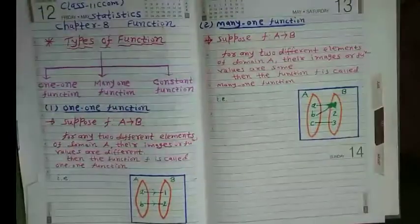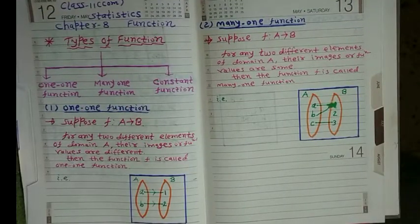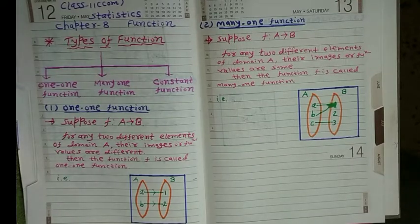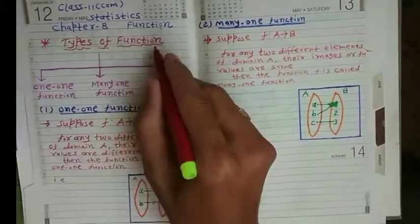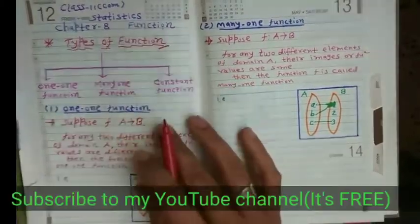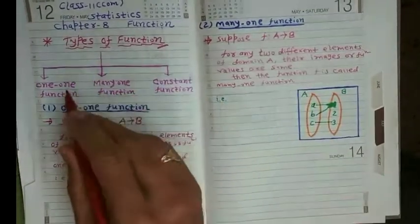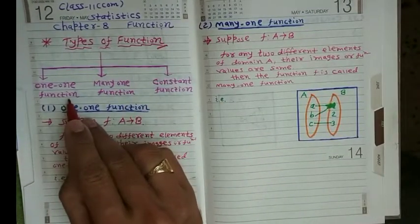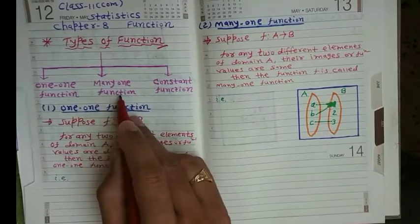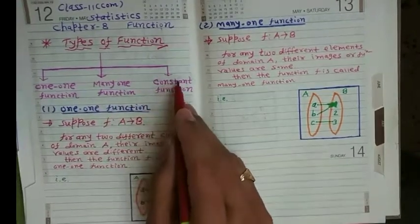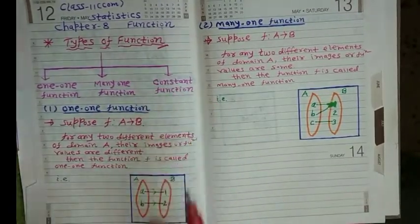Good morning dear students. Today we are going to learn Class 11, subject Statistics, Chapter number 8: Functions. We are going to discuss about types of functions. There are mainly three types of functions: first, one-one function; second, many-one function; and third, constant function.